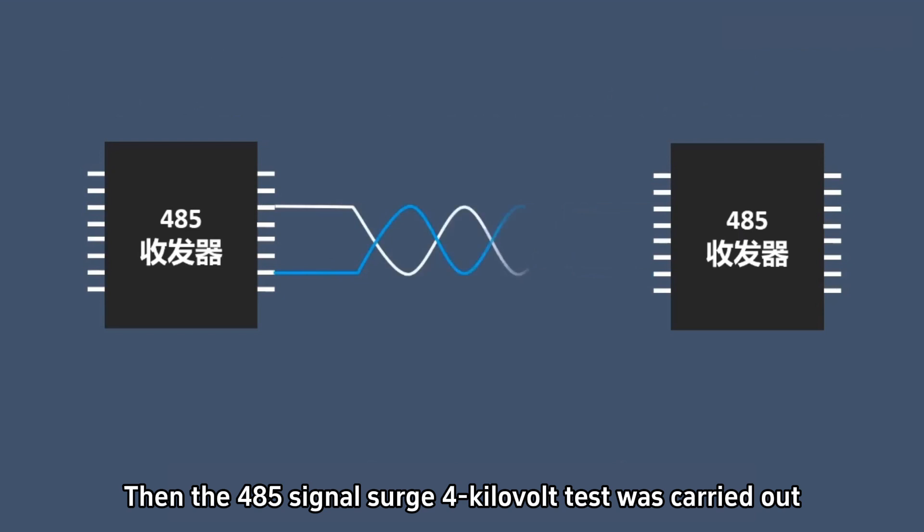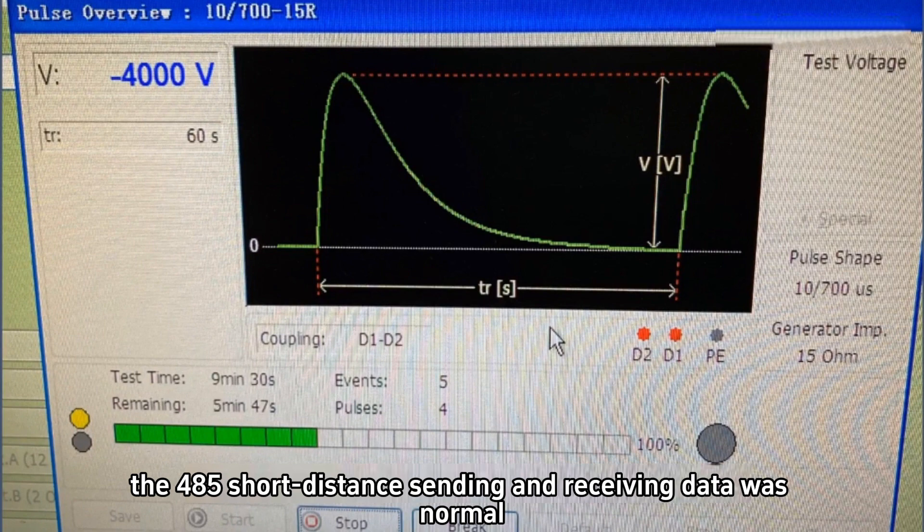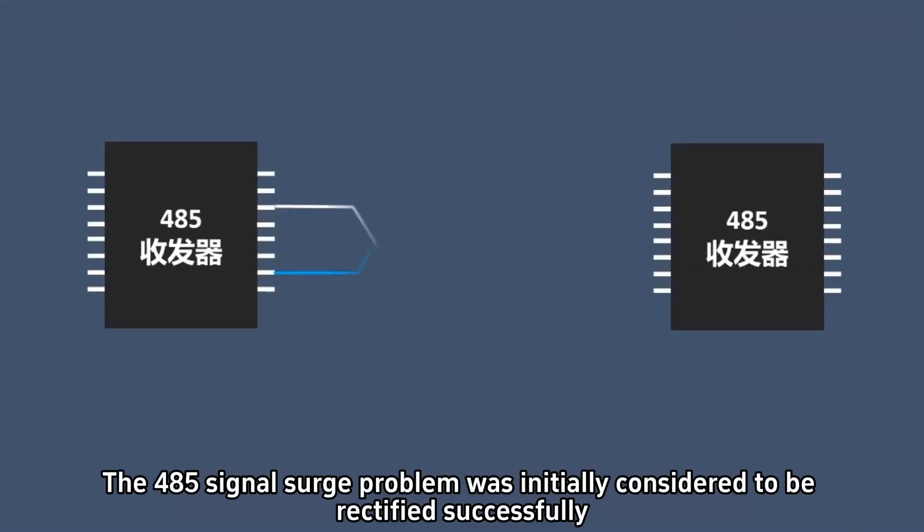Then the 485 signal surge 4 kilovolt test was carried out. After the surge test, the 485 short-distance sending and receiving data was normal. The 485 signal surge problem was initially considered to be rectified successfully.